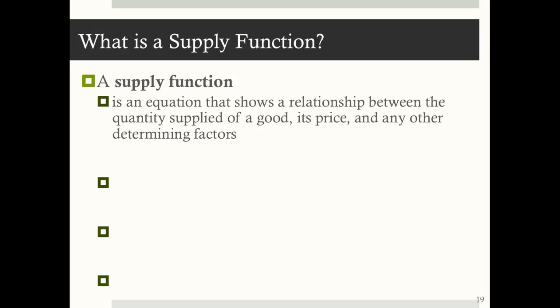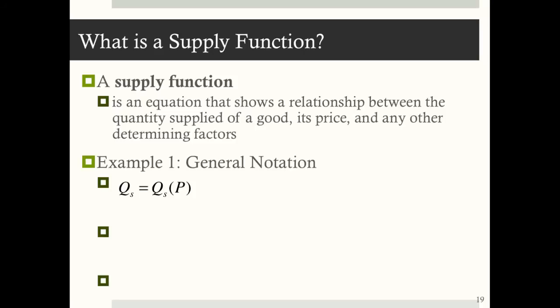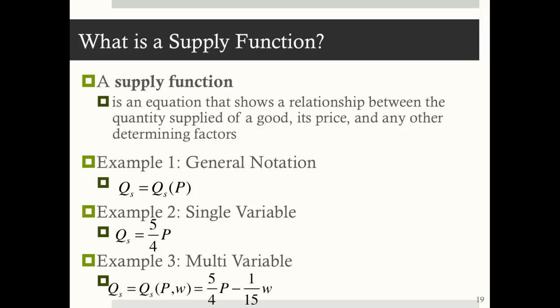The supply function is an equation that shows the relationship between the quantity supplied of a good, its price, and any other determining factors. In general notation, quantity supplied depends on price. More specifically, a single-variable example is Q sub S equals five-fourths times P. A multi-variable example is Q sub S equals five-fourths P minus one-fifteenth W, where W is the wage rate.